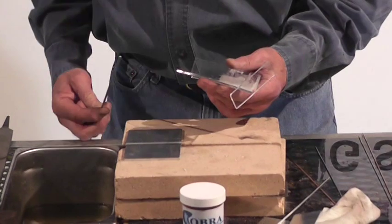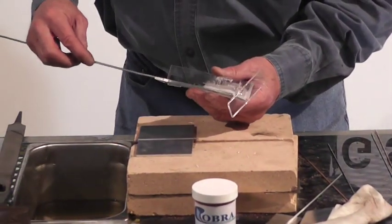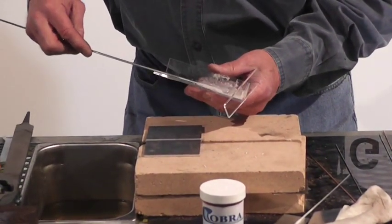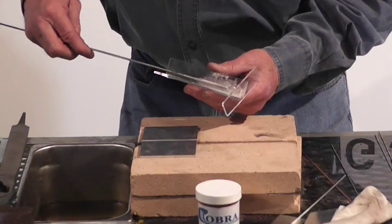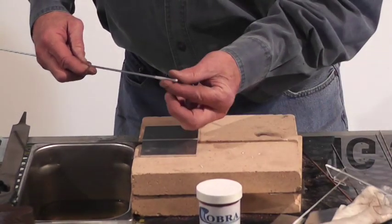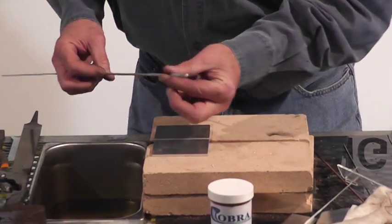Alright, I'm using a one-eighth rod, a thicker rod for your thicker aluminum. Take your flux, just mix it with a little bit of water. All you need to do is just put it strictly on the rod right here.